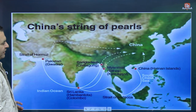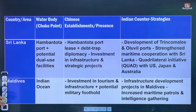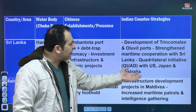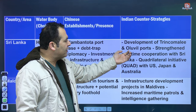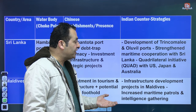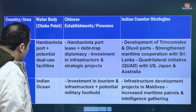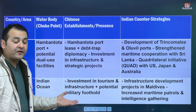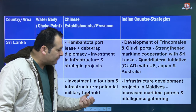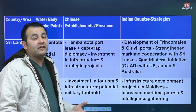China's string of pearls involves developing logistics and infrastructure. For Sri Lanka, China developed Hambantota port in the Indian Ocean. India is trying to develop Trincomalee and Oluvil ports and strengthen maritime cooperation with Sri Lanka. There is also the Quadrilateral Initiative — the Quad — with the US, Japan, and Australia to counter the Chinese threat. In Maldives, India is trying to develop infrastructure and increase maritime patrols and intelligence gathering, though things are not moving in the right direction at the right pace.